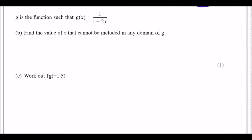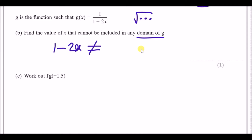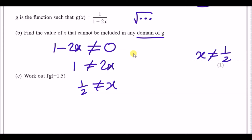g is the function such that g(x) = 1/(1 − 2x). Find the value of x that cannot be included in the domain of g. The rule for fractions: the denominator cannot be zero, because you can't divide by zero. So 1 − 2x cannot equal zero. Solving: 1 = 2x, so x = 1/2. That's the value of x we're not allowed to use.